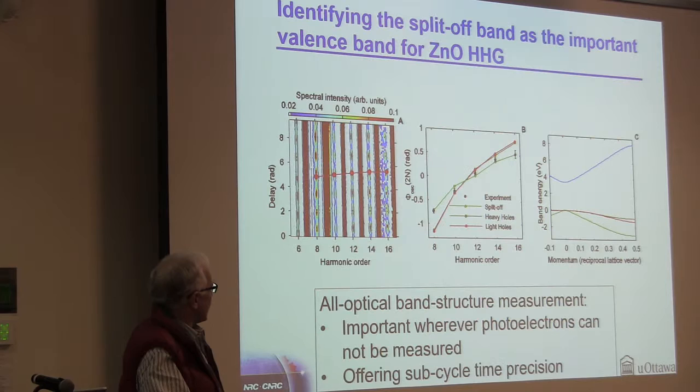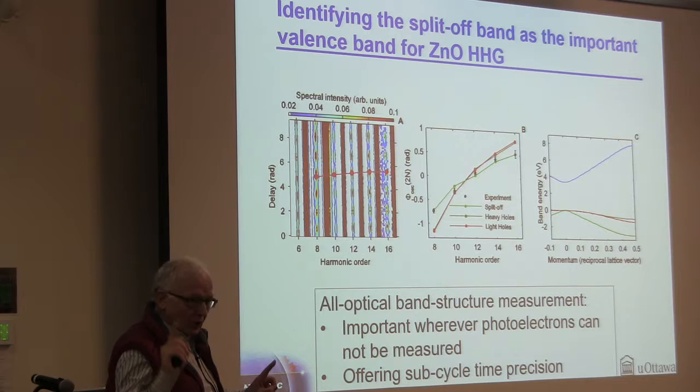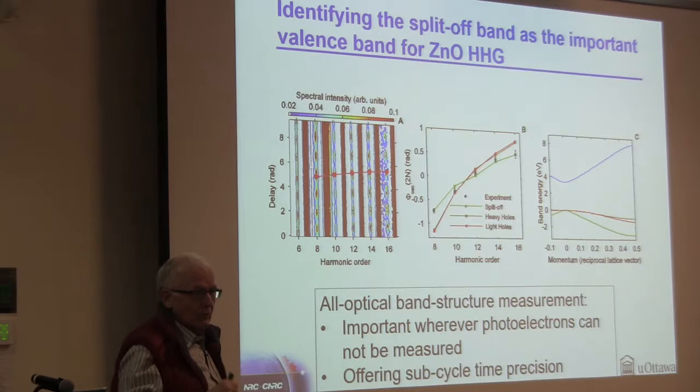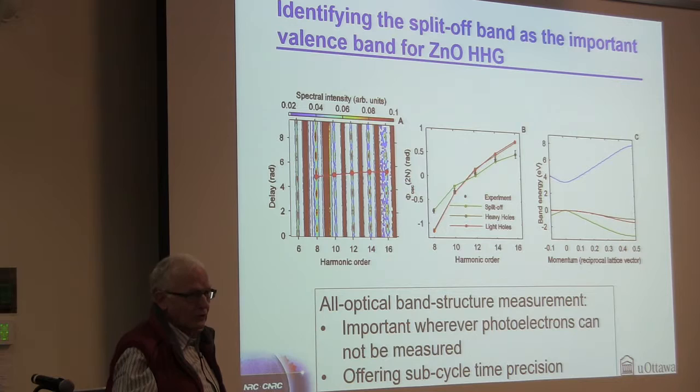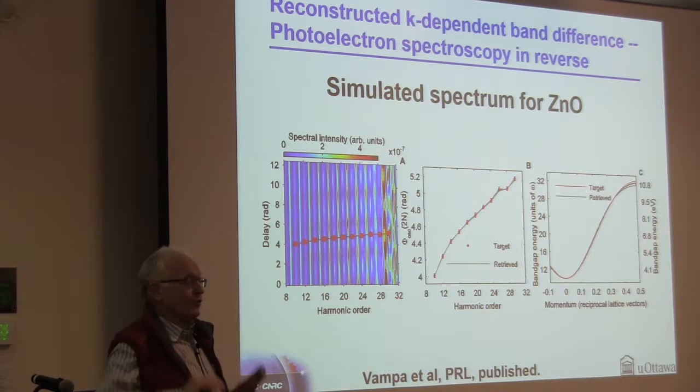So far our experimental data only goes up to harmonic 16 or 18, and we don't have enough data to fully look at a band structure, which we have to go to 30. What we can only do so far experimentally is identify between a set of potential bands what was contributing to the harmonics. And we find the low mass band is what's important. But that's what we sort of knew in the first place.